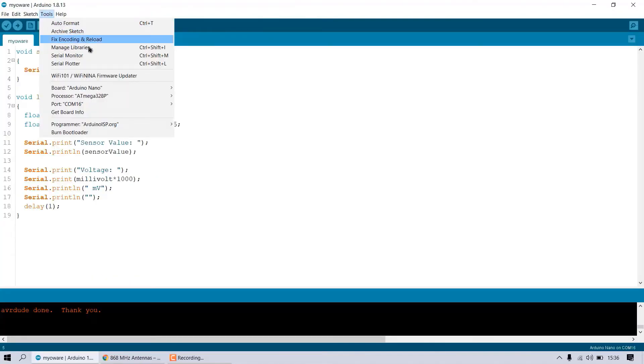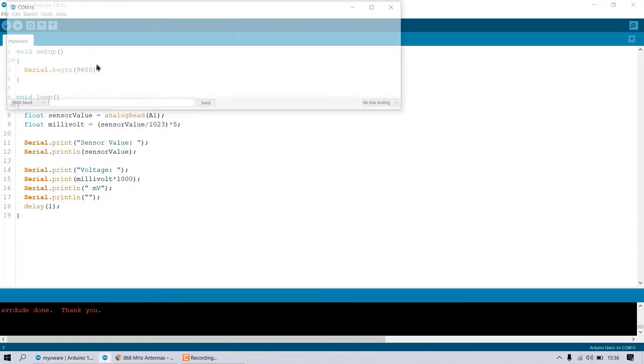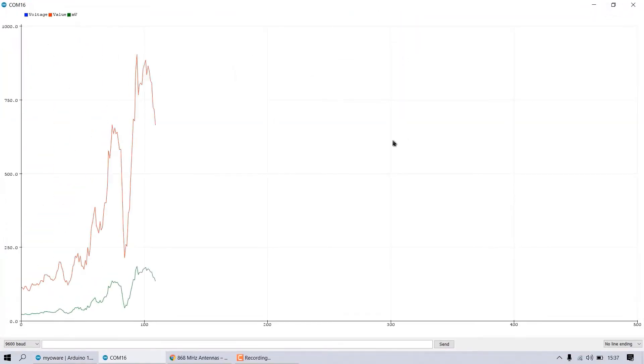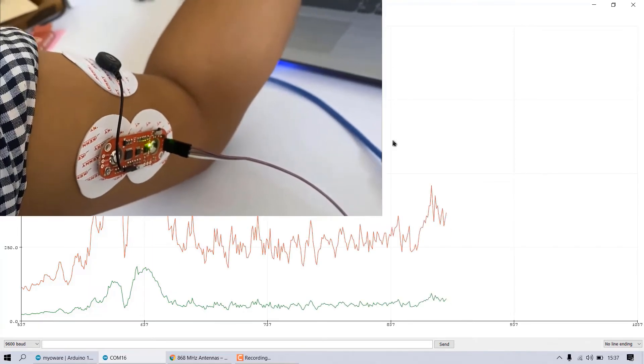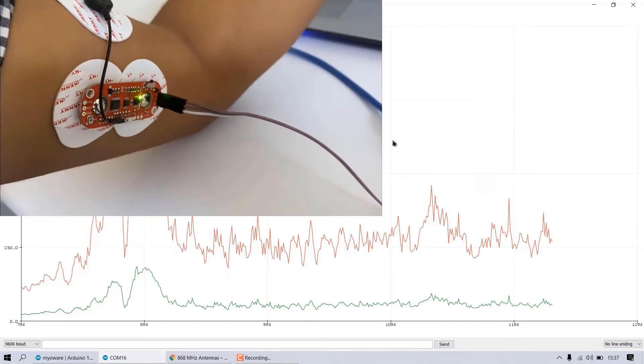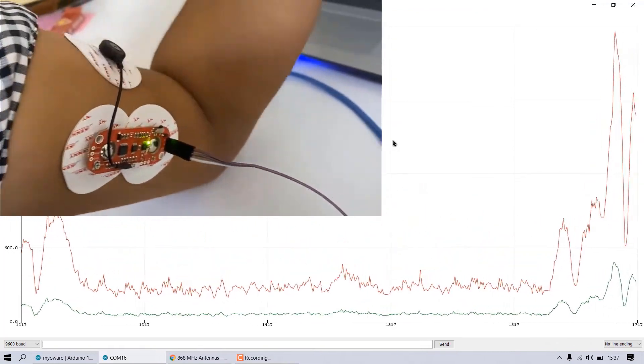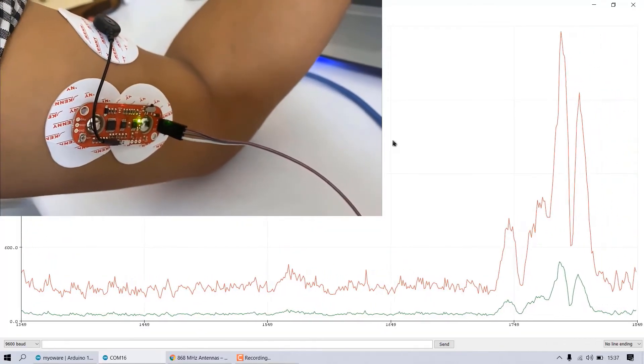Now, if you want to display the data in graphical format, then you can open the serial plotter from the tools section. So, here you see the graph generated because of the contraction and expansion of the muscle. Such a great device, isn't it? You can directly monitor the movement of your muscle here. I say you must try this project at your home.